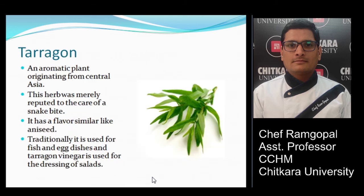Tarragon is an aromatic plant originating from central Asia. Historically it was reputed to cure snake bites. It has a flavor similar to anise seed. Traditionally it is used for fish and egg dishes, and tarragon vinegar is used for dressing various salads.